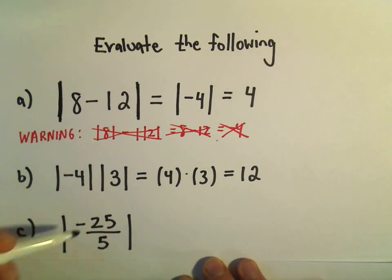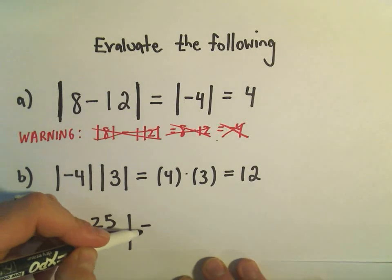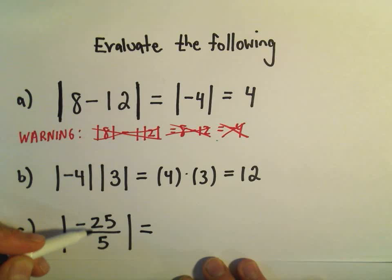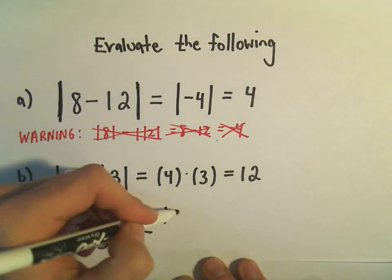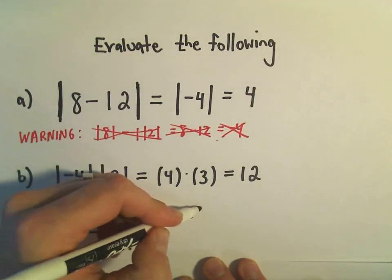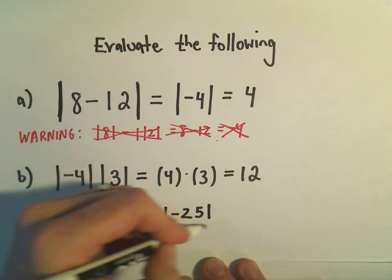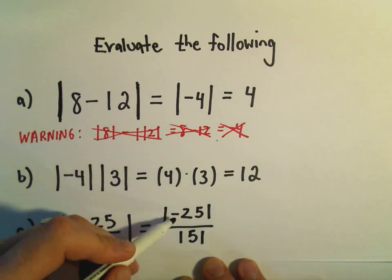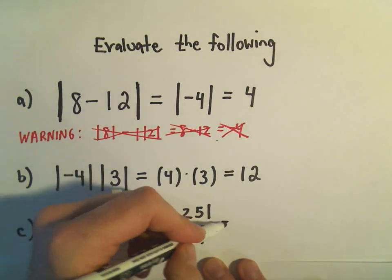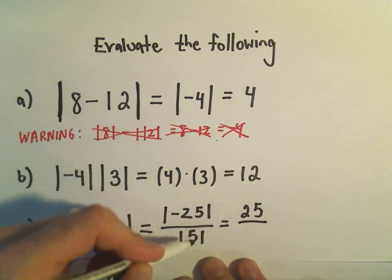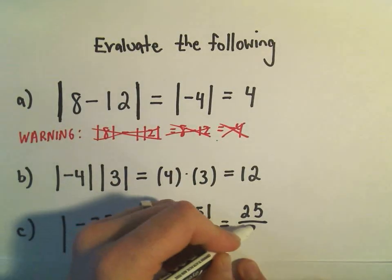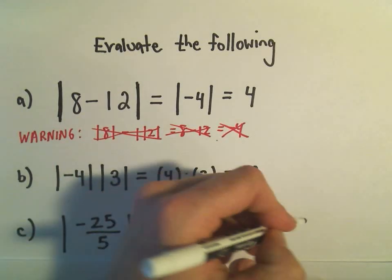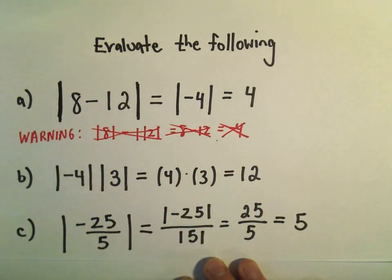Another way to do this, just to illustrate some of the properties, remember if you have a fraction inside of absolute value, we can write that as the absolute value of the numerator over the absolute value of the denominator. And the absolute value of negative 25 would simply be positive 25. The absolute value of 5 is just 5. And if we divide 25 over 5, again, gives us our solution of positive 5.